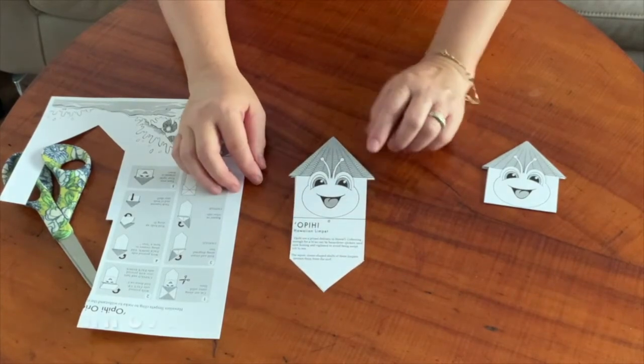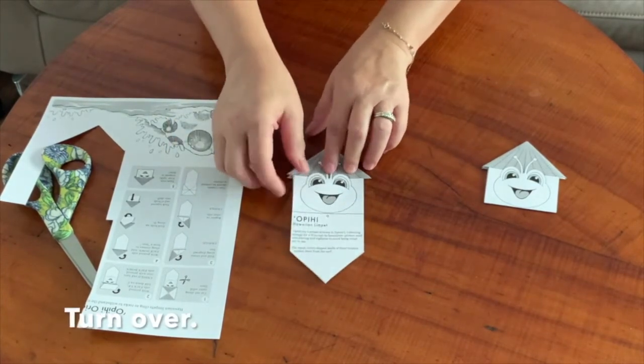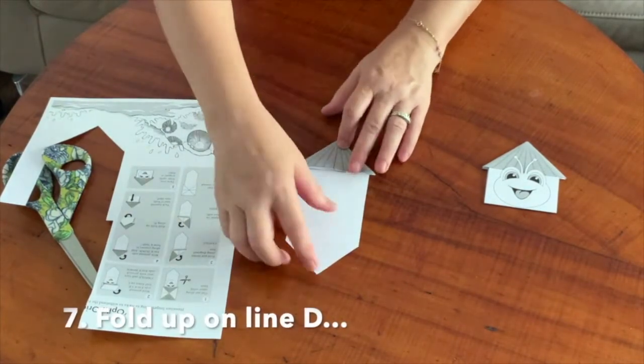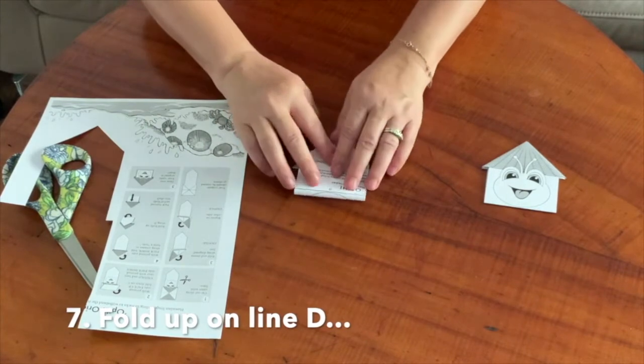The last step is to turn it over and fold up along line D. So turn your shell over and fold it up on line D.